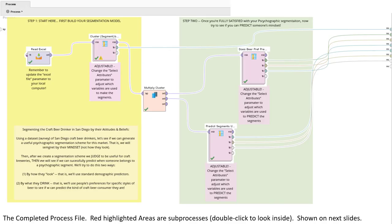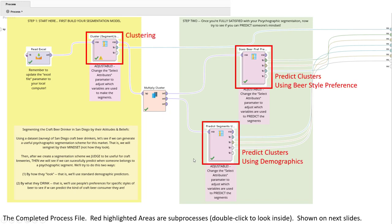This is the overview of our process file. It looks like a lot, but let's break down its overall objectives. Here is a subprocess where we're actually going to do the clustering — we're going to generate our market segments inside this operator. Then, with our segments created, our next task is to predict which of those segments someone belongs to, based on either demographic variables or beer-style preference variables. There are two more subprocesses, each being a prediction model subprocess trying to predict cluster membership.